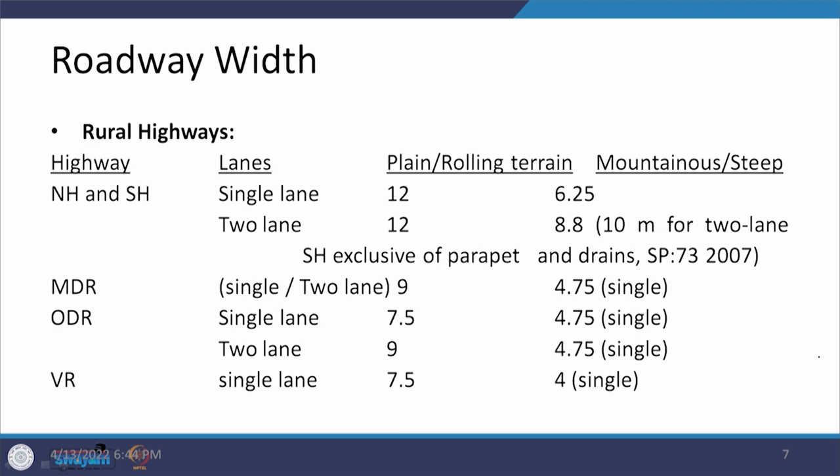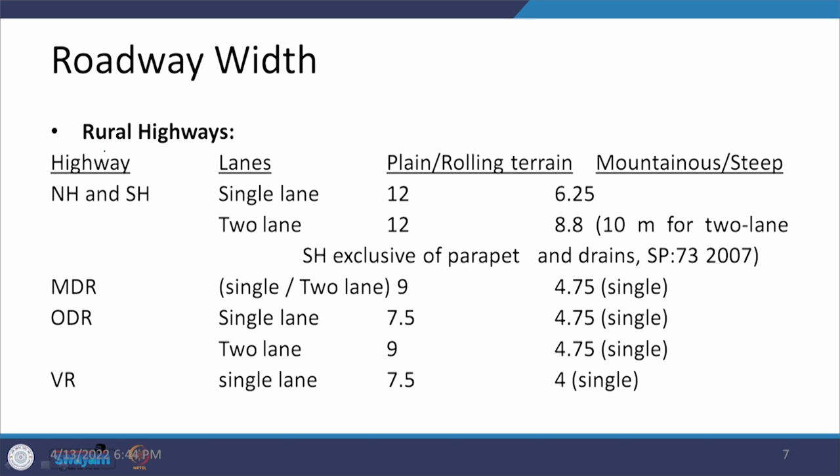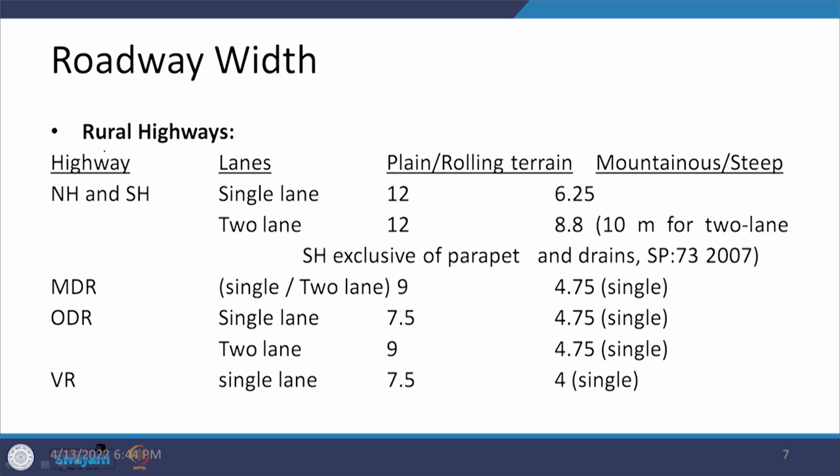For rural highways, national highways and state highways share the same specifications. For a plain and rolling terrain, whether single lane or two lane, a 12-meter wide roadway is required. In mountainous or steep terrain, it can be 6.25 meters or 8.8 meters respectively for single and two-lane national and state highways.